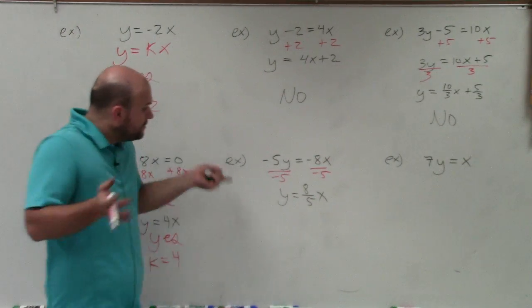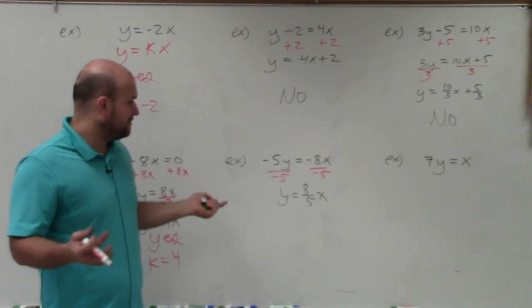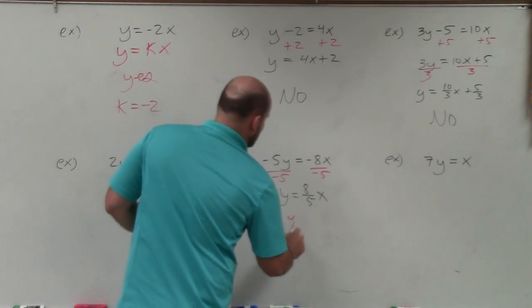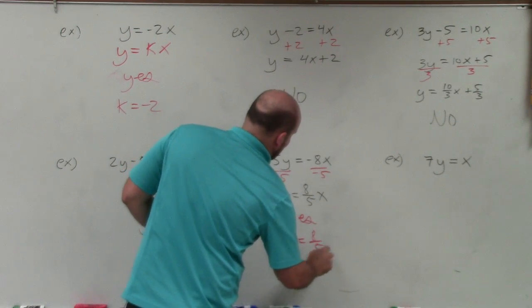So therefore, when you do this, when you just leave it like that, you can't reduce it any further. So I have 8 over 5. That's going to be my constant. So yes, this is in the form of direct variation, where k is equal to 8 fifths.